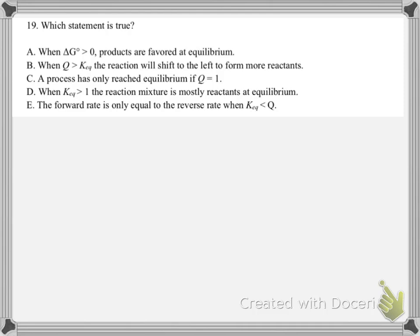We have another true/false question. The first one says when delta G is greater than 0, products are favored at equilibrium. We know that if we have a positive delta G standard, our Keq is less than 1 and reactants are favored. So A is going to be false.